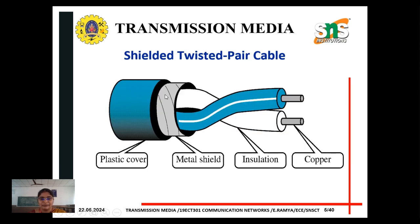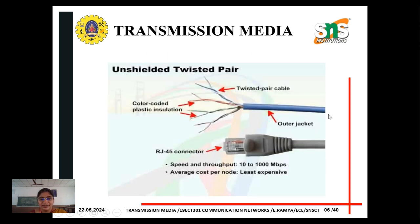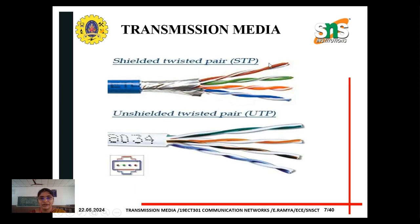Shield twisted pair — in this diagram we can understand shield twisted pair. It has a plastic cover, metal sheet, and finally copper is available after the insulation. The outer connector, the RJ45 connector, is used for the LAN connection. We have sealed twisted pair (STP) and shielded twisted pair.